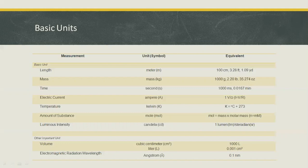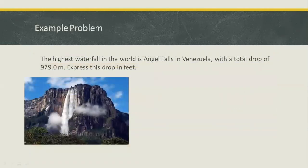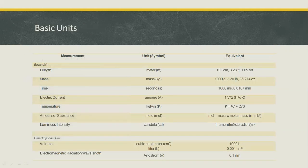So the unit symbol we can see in the second column, and also the equivalent in other unit systems. For example, the highest waterfall in the world is Angel Falls in Venezuela, with a total drop of 979 meters. Express this drop in feet. As we go back in the table, notice that for length, 1 meter is equivalent to 3.28 feet, so we will use this equivalent in solving the problem.